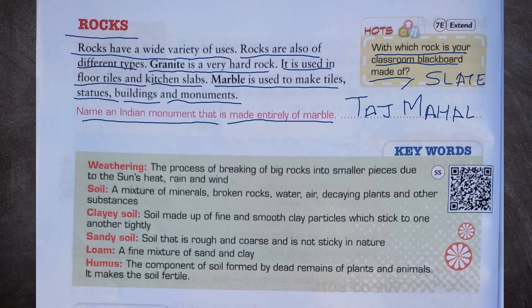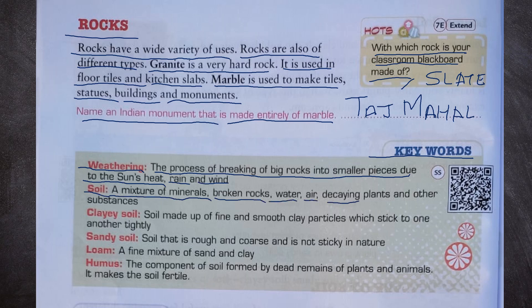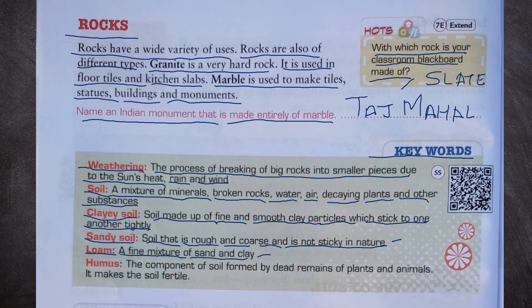Keywords: Weathering — the process of breaking of big rocks into smaller pieces due to the sun's heat, rain, and wind. Soil — a mixture of minerals, broken rocks, water, air, decaying plants, and other substances. Clay soil — soil made up of fine and smooth clay particles which stick to one another tightly. Sandy soil — soil that is rough, coarse, and not sticky. Loam — a fine mixture of sand and clay. Humus — the component of soil formed by dead remains of plants and animals; it makes the soil fertile.